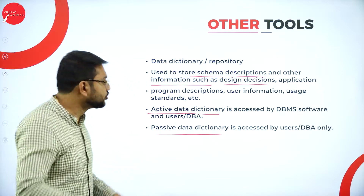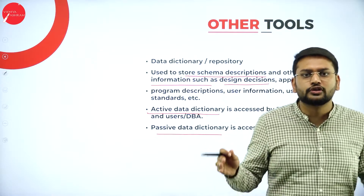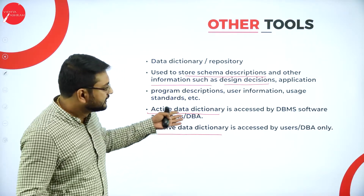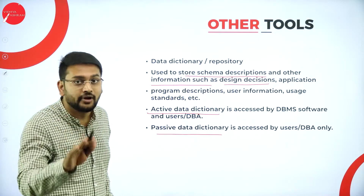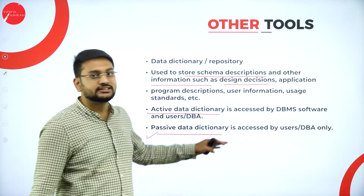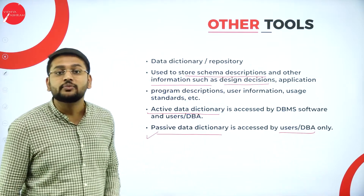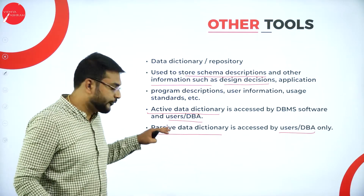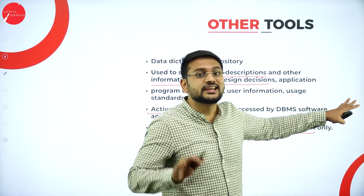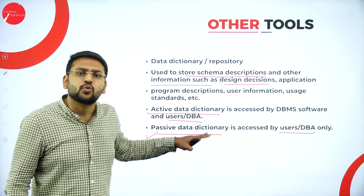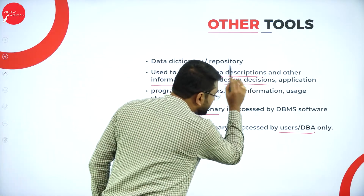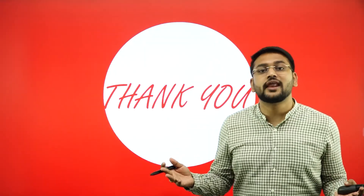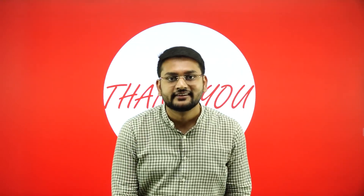The data dictionary also stores user information. An active data dictionary is accessed by DBMS software as well as users and the DBA. A passive data dictionary is accessed only by users or the DBA — the DBMS software does not access it. Both types store descriptions of the schema and user information. That concludes this session — take care, happy learning!